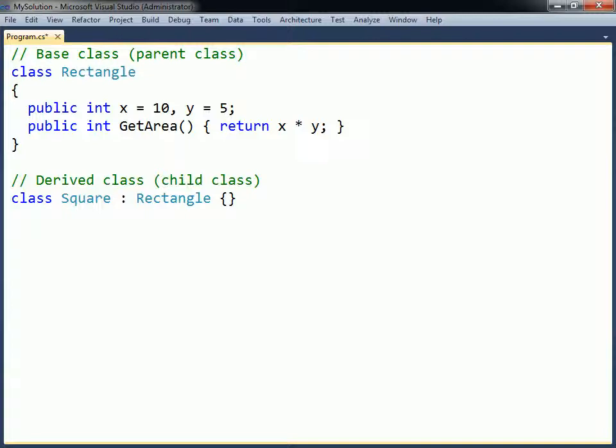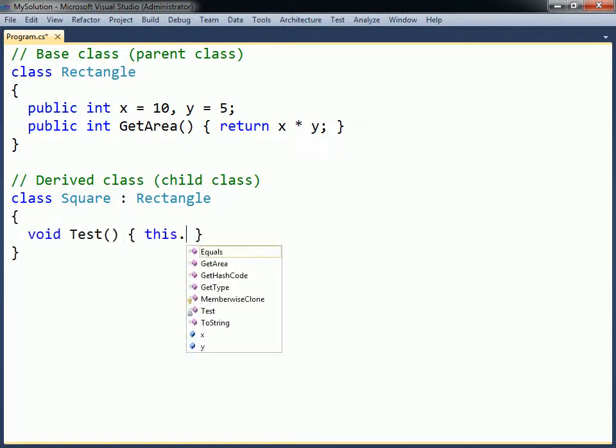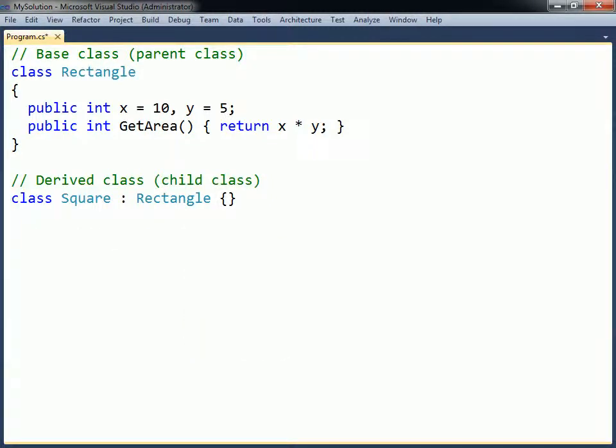In addition to its own members, Square gains all accessible members in Rectangle, except for any constructors and destructor. A class in C-sharp may only inherit from one base class.